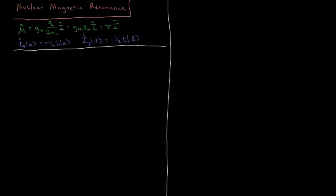From previous videos we have our magnetic dipole, which is equal to, when defined as an operator, a proportionality constant called the nuclear factor, times the charge of the nucleus divided by 2 times the mass of the nucleus, times our total nuclear spin angular momentum operator I. This is equal to G times the nuclear magneton, which is Q over 2m, and that's also equal to gamma — G_n times beta_n — called the magnetogyric ratio.